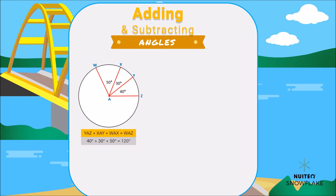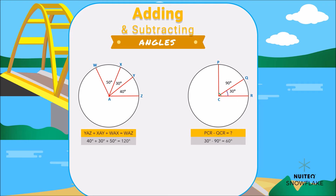Now, what if I ask you the following: what is the difference of these two angles? What would be your answer? Well, we just need to subtract angle PCR and angle QCR. The answer is 60 degrees.